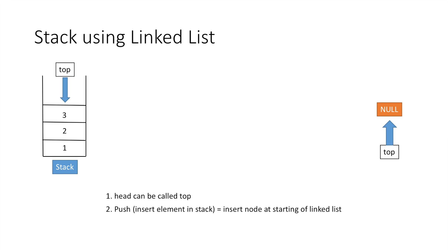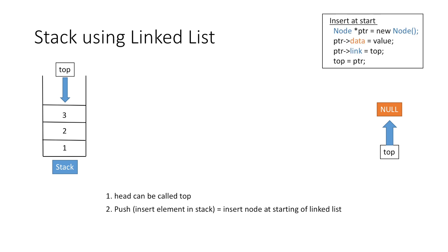To insert an element at the starting of a linked list, firstly we create a new node using the new operator and return its address into our temporary pointer ptr. Then in the data part of the node we store the value, and in the link part we store the address of the next node, and then we move our top pointer to the newly created node.